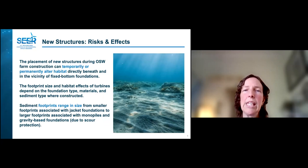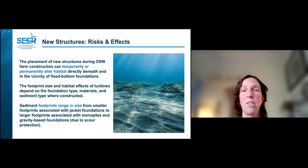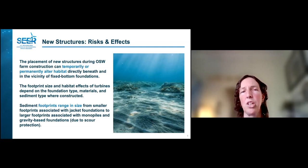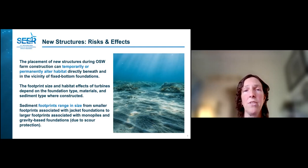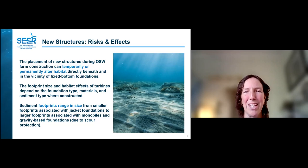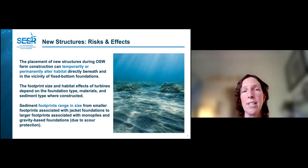The implications for fish communities that result from offshore wind energy farms depends on understanding both the effects on fish habitat and resources, as well as broader ecological consequences. The placement of new structures during construction can temporarily or permanently alter habitat directly beneath and in the vicinity of the foundation. Here we're talking about fixed bottom foundations — we'll talk about floating in a minute. The footprint size and habitat effects of turbines depends on the foundation type, materials used, scour protection, and sediment type.